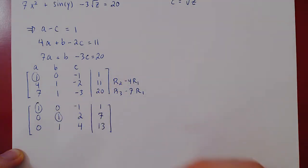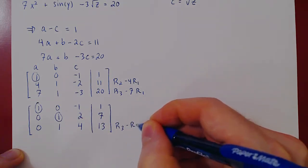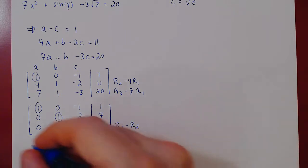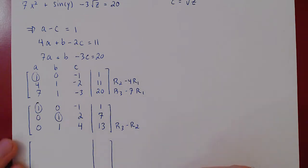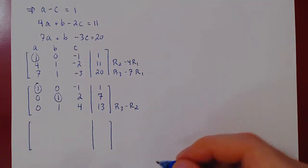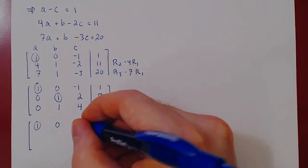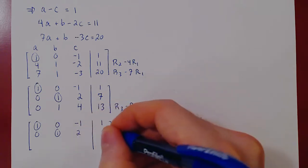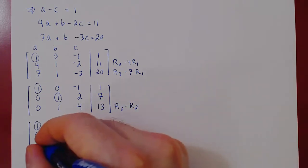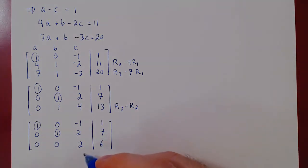We have our second leading one for free. We can kill the entry below by doing row 3 minus row 2. We can recopy row 1 and row 2 as we're not changing them. And we can easily get our third leading one by multiplying row 3 by 1 half.